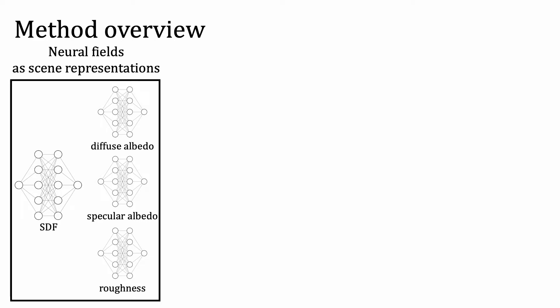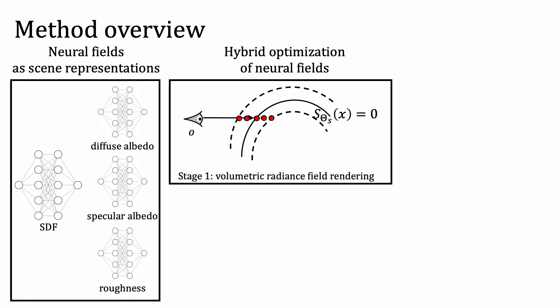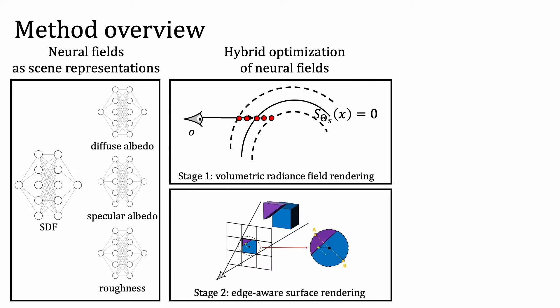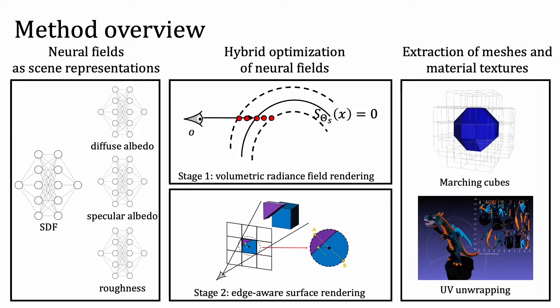We optimize these scene representations using image reconstruction losses, penalizing the difference between rendered and captured images. The optimization proceeds in a hybrid way with two stages. In the first stage, we use volume rendering to reconstruct a volumetric radiance field. In the second stage, we locate a surface and refine it using surface rendering along with lighting and materials. Once the optimization is done, we extract a mesh and material textures for use in graphics.